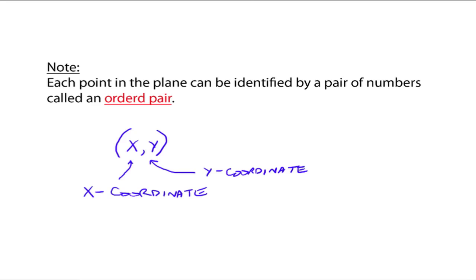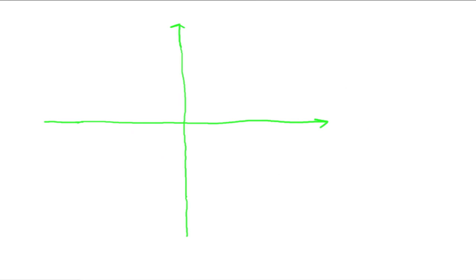Our ordered pairs look like something like (2, 3): the x-coordinate is 2 and the y-coordinate is 3. It's called an ordered pair for a reason because the order matters — x is first and y is second. We can plot points in the plane; plotting is just another name for graphing.